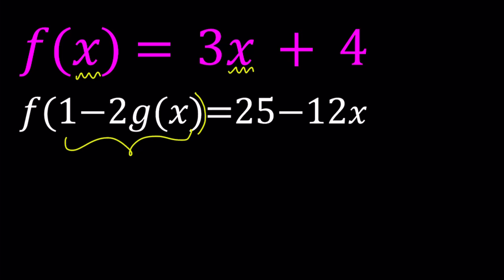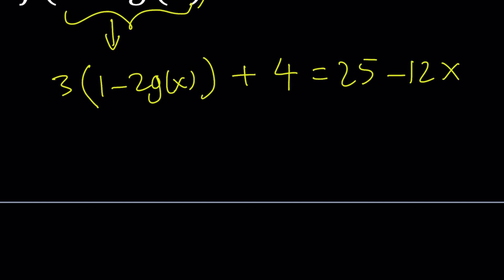So if you use that definition, f of 1 minus 2g of x is just going to take that quantity, multiply by 3, that's what the rule says, and then add 4. So this is the same thing as f of 1 minus 2 times g of x. And we're also given that it's equal to 25 minus 12x. So how do you solve for g of x from here?